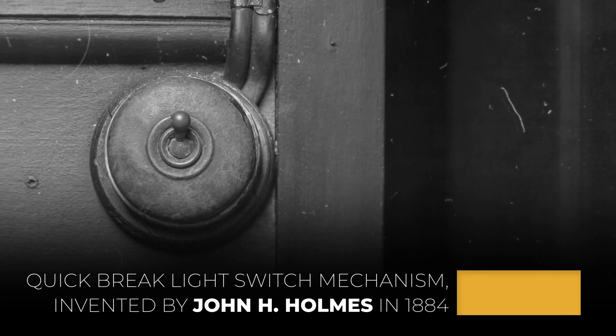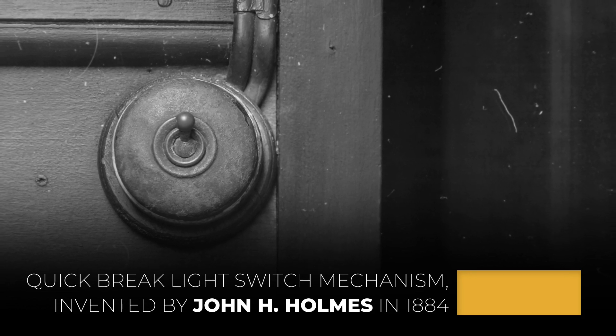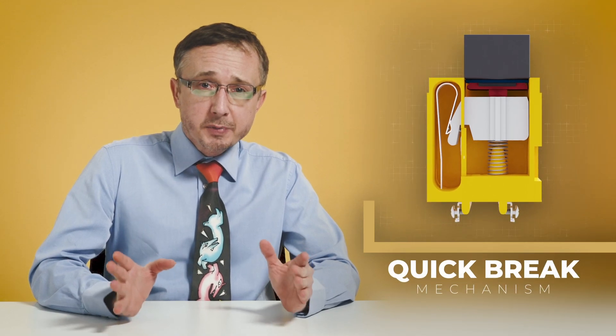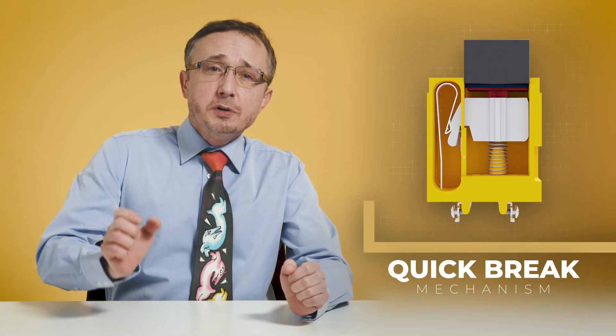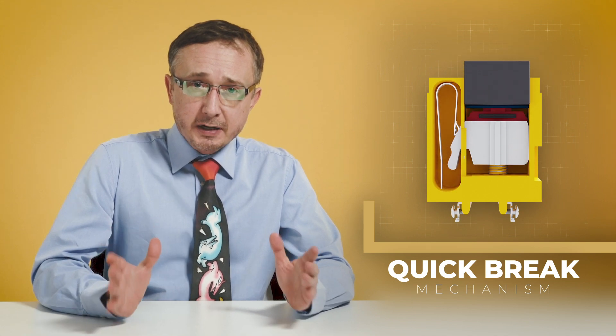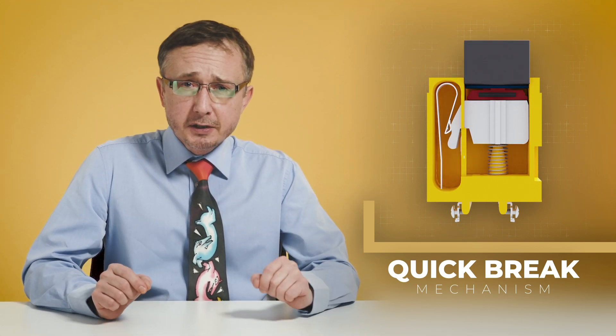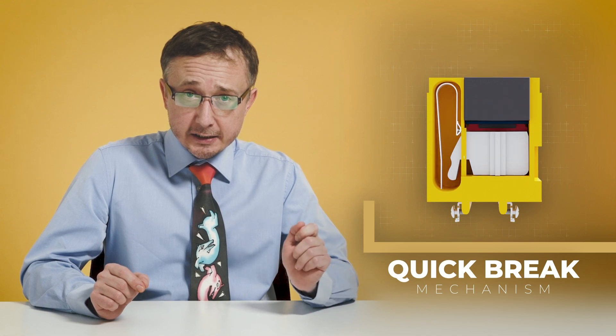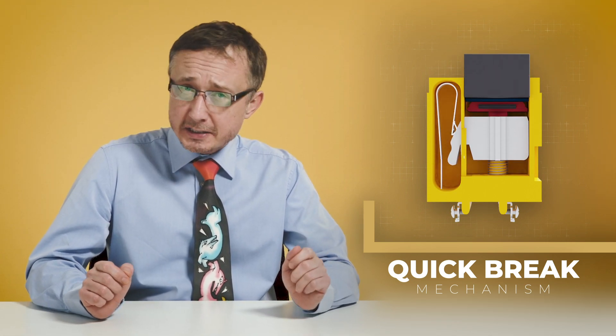The first light switch, using so-called quick break technology, was said to have been invented by John Henry Holmes in 1884. The quick break switch overcame the problem of electric arcing whether the circuit is open or closed. This quick break mechanism meant that there is not sufficient time for an arc to form, and the switch would have a long working life. Believe it or not, this technology is still in use in almost every electrical switch.